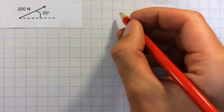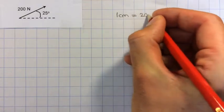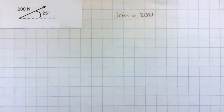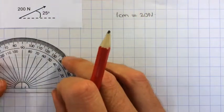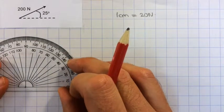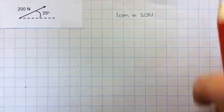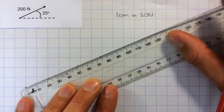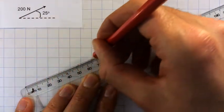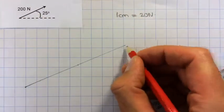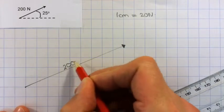In order to do this, my first job is to come up with a scale. I think I'll do 1cm equals 20N because that will mean this will be 10cm long, which will be a nice size. So if I choose that's my starting point, then I need to measure my angle of 25 degrees and I can now draw in my vector which needs to be exactly 10cm long. Here we go. Try and get the arrow head perfect at the end. And I can label that as my 200N.